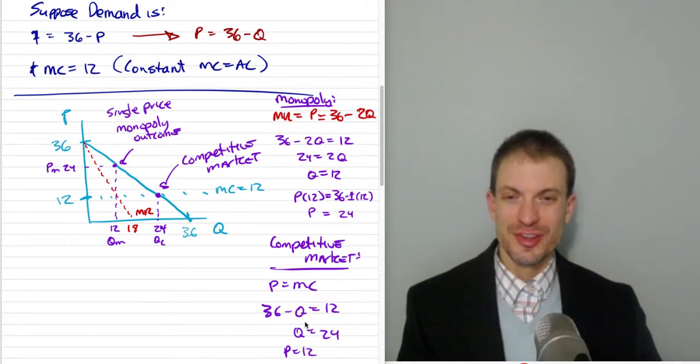36 minus q equals 12. Price equals marginal cost. This gives us a quantity of 24 and a price of 12. So the competitive market would produce 24 units. The monopoly is only going to produce half of that, 12 units.